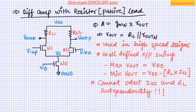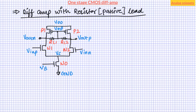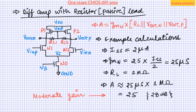The next topology gets around this problem by connecting resistors not to the supply but to the common-gate node of PMOS transistors. This common-gate node acts as a small-signal ground, so the small-signal gain is the same as the previous topology. However, only differential current flows through the resistor, not the common-mode bias current, so we can choose the bias current and resistor values independently. A sample calculation for 2 microamperes of bias current and 1 megaohm of resistor shows a gain of around 25, though a 1 megaohm resistor may require considerably large area.